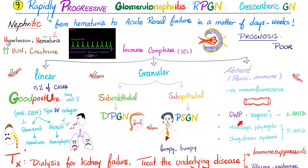C-ANCA is positive in granulomatosis with polyangiitis. P-ANCA is positive in the rest, including microscopic polyangiitis and Churg-Strauss syndrome. The prognosis is horrible — it's rapidly progressive. Try to manage symptoms and treat the underlying condition. Dialysis for kidney failure. If you have Goodpasture syndrome, you will need plasma exchange to wash out the antibodies targeting type 4 collagen.